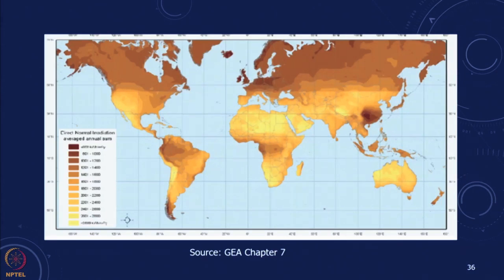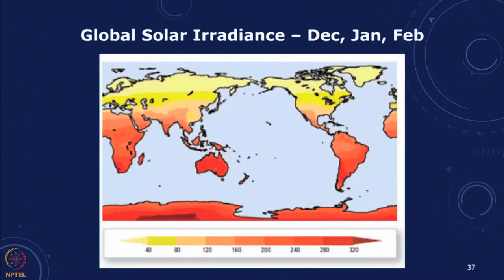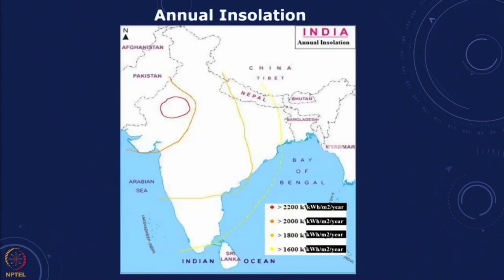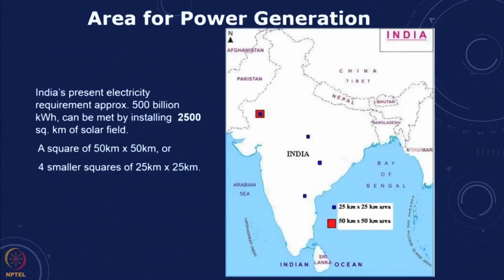In the Indian context we have reasonably good DNI across most parts of the country with some variation. The average global solar irradiance shown in watts per meter squared covers months like December, January, February and June, July, August from the global energy assessment. In the case of India, most of the country has a DNI greater than 1900 kilowatt hours per meter squared, and some regions have more than 2200, which is quite good.